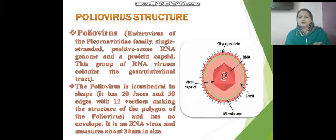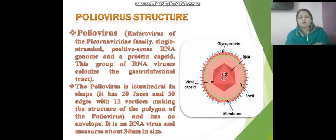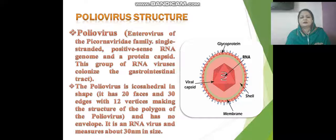The poliovirus is an RNA virus with a glycoprotein and viral capsid. It is an enterovirus belonging to the Picornaviridae family — a single-stranded, positive-sense RNA virus with a protein coat. It can colonize the gastrointestinal tract. Poliovirus is icosahedral, having 20 to 30 faces or edges, surrounded by a polygon. It has no envelope and its size is 30 nanometers.